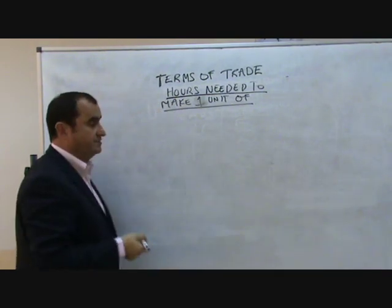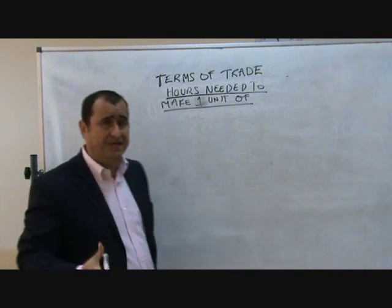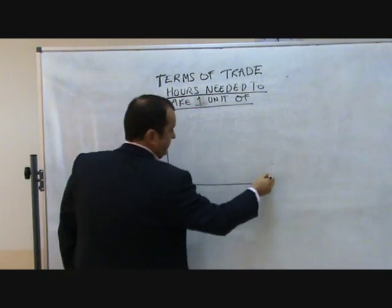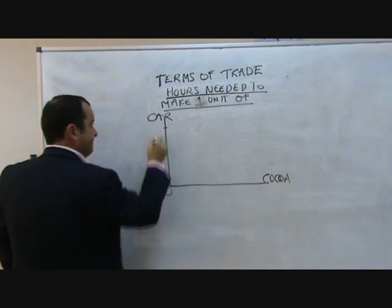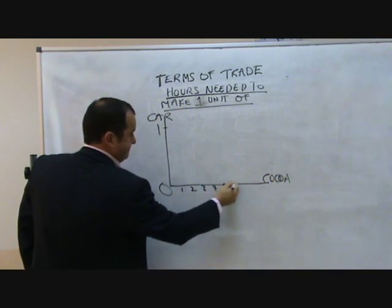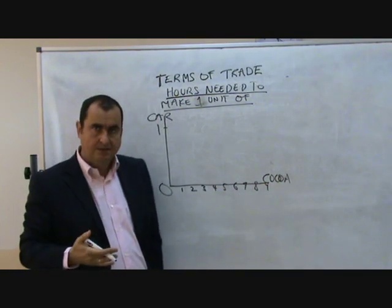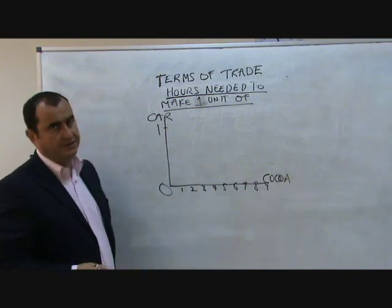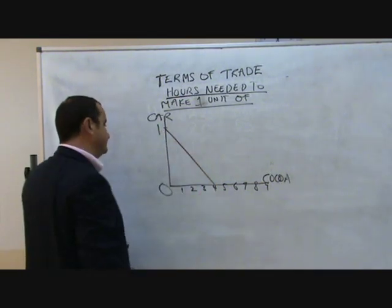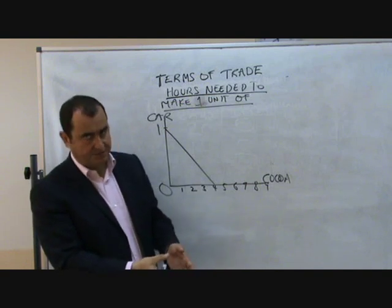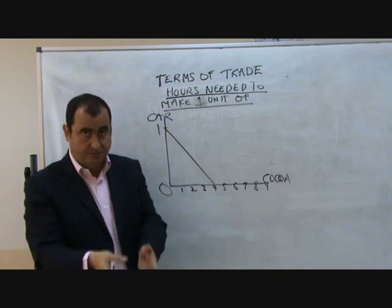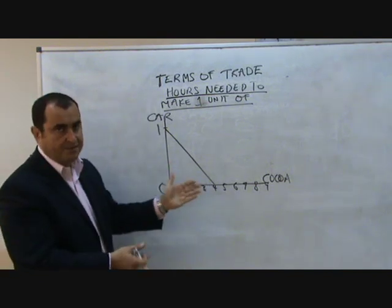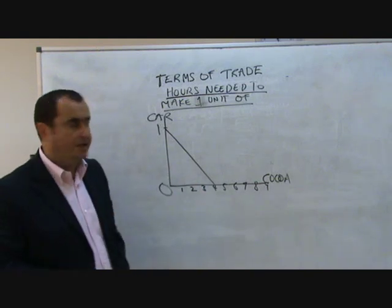We don't know the total amount of resources available in the two countries, so I can't draw the actual production possibility frontiers. But I can draw the opportunity cost ratios. In the UK, every time they make a car — which takes 20 hours — they could have made four units of cocoa, because it takes five hours to make a unit of cocoa. So with every 20 hours, they could make one car or four units of cocoa. This shows the opportunity cost ratio between cars and cocoa in the UK: one to four.